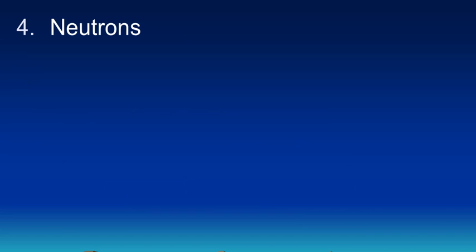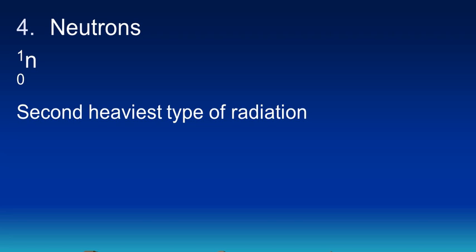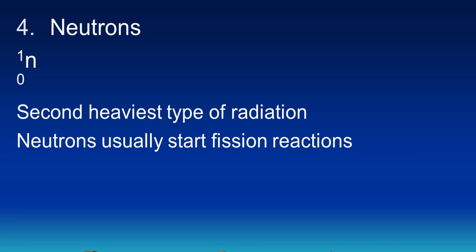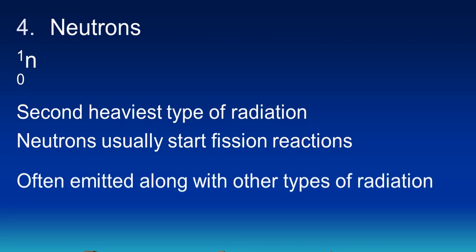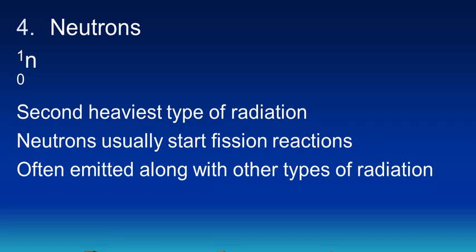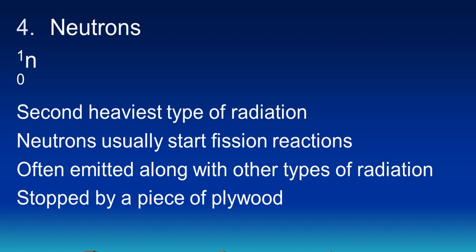A fourth type of ionizing radiation, we sometimes classify neutrons in this group. The symbol for a neutron has a mass number of 1, it doesn't have any charge, so its atomic number is 0. We know neutrons as being a subatomic particle that exist along with protons in the nucleus. These are considered to be one of the heavier types of radiation, the second heaviest type, and as a result they're not especially penetrating. But they're important because they're usually used to start a fission reaction. Neutrons are often emitted along with other types of radiation, sometimes with alpha particles or gamma rays. It's generally pretty easy to stop a neutron or a stream of neutrons. Usually a piece of plywood is enough to stop it.